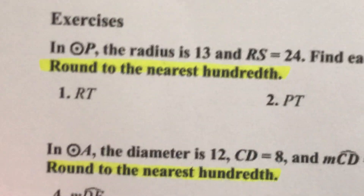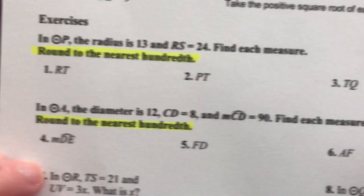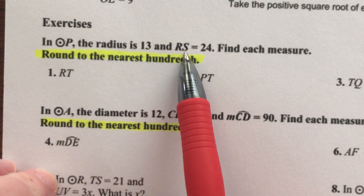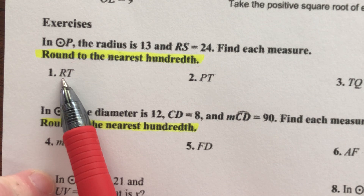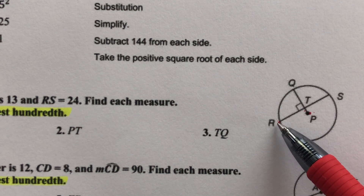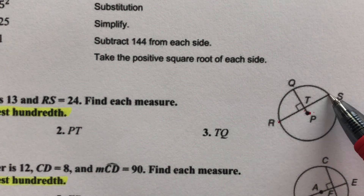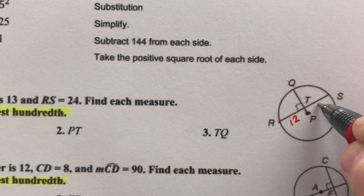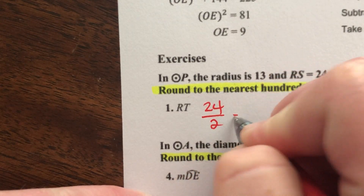Now let's do a few on our own. In circle P, the radius is 13 and RS is 24. We need to find each measure rounded to the nearest hundredth. First, RT: since the diameter is perpendicular to RS, it cuts RS exactly in half — 24 divided by 2 equals 12. So RT is 12 units.